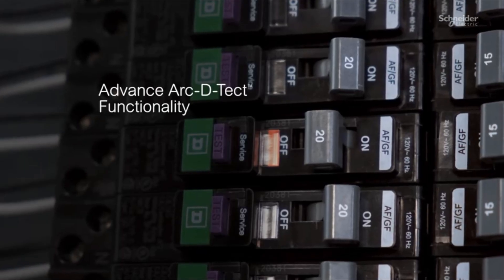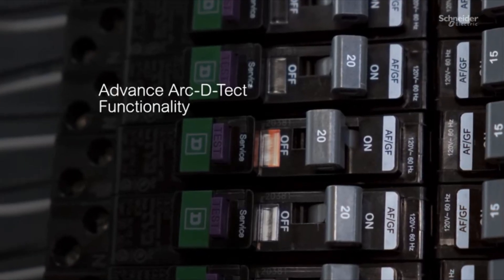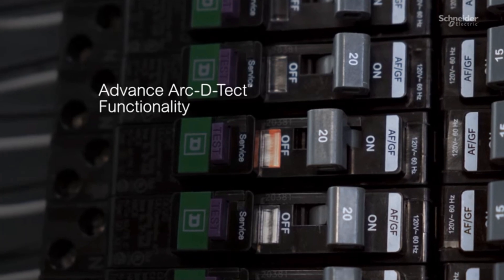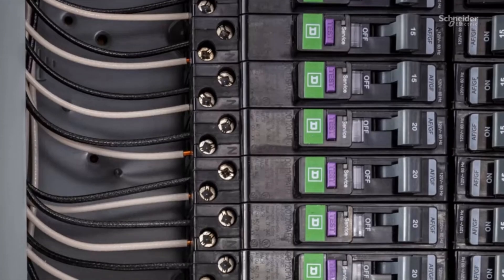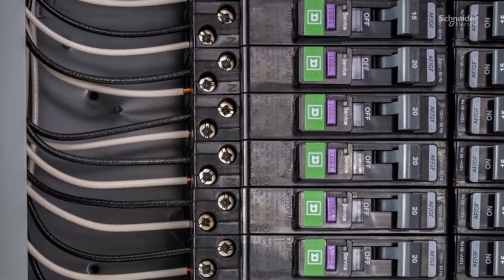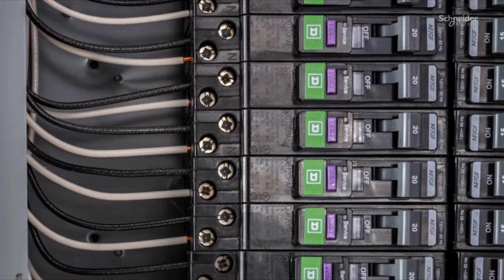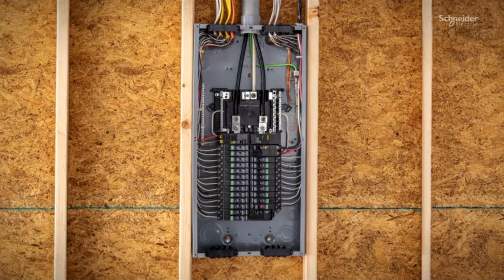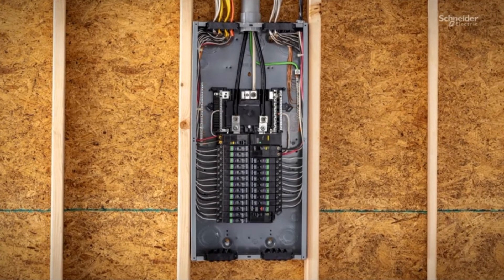The embedded advanced arc detect functionality builds upon Square D's proven industry-leading arc fault detection and reliability. Advanced arc detect learns and adapts to real-time environmental conditions, ensuring superior interoperability and performance. The new arc fault and dual function circuit breakers are certified to the latest product standards.